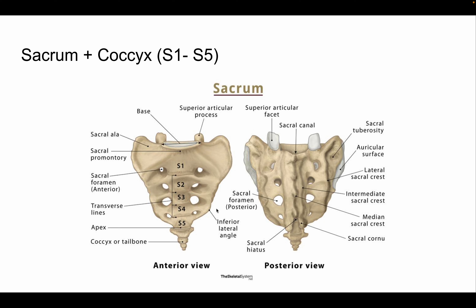The apex of the sacrum is where the sacrum articulates with the coccyx. You can also see the superior articulating facets and the sacral canal. The beginning of the sacral canal is called the sacral hiatus. The sacral cornua are the small tubercle-like nubs on each side. The spinous structure along the midline is called the medial sacral crest.